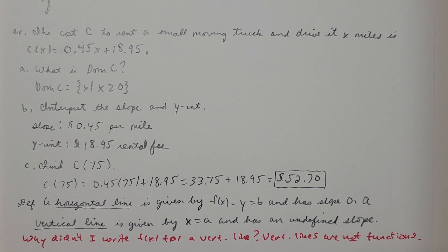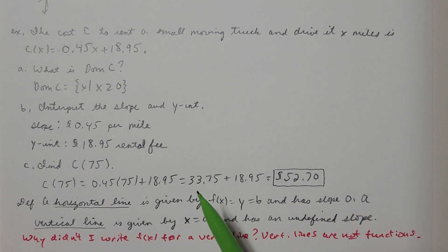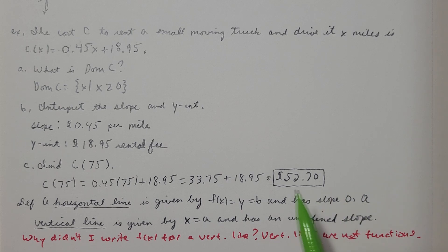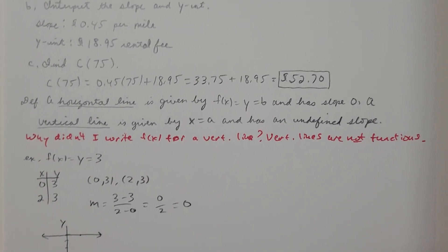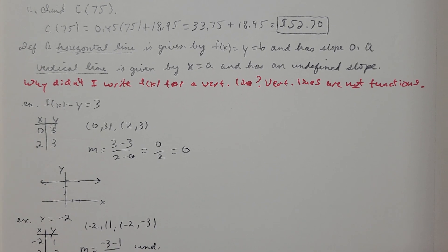For part c, finding C(75): replacing x with 75, I get 0.45 times 75 plus 18.95. That's 33.75 plus 18.95, which equals $52.70. So it would cost $52.70 to rent the truck and drive it 75 miles.